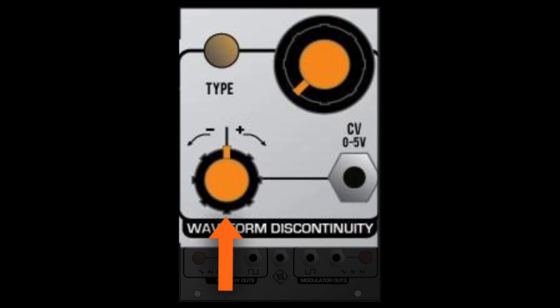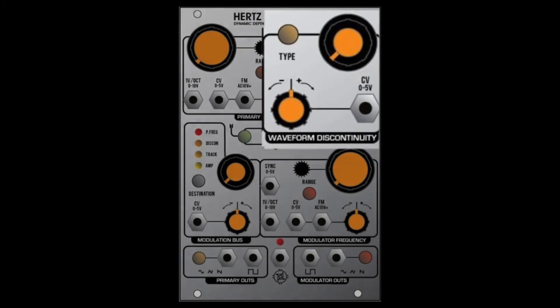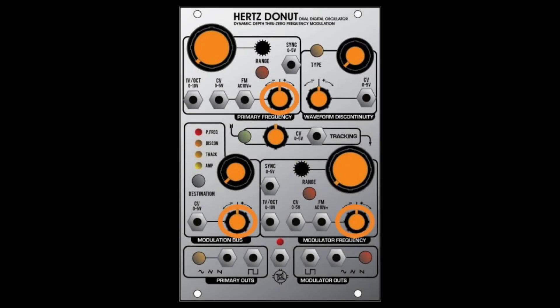The amount of modulation applied can be controlled with the attenuverter to the left of this input. This control is bipolar just like the others on the Hertz Donut, which means your control voltage can be applied in the positive or negative direction.